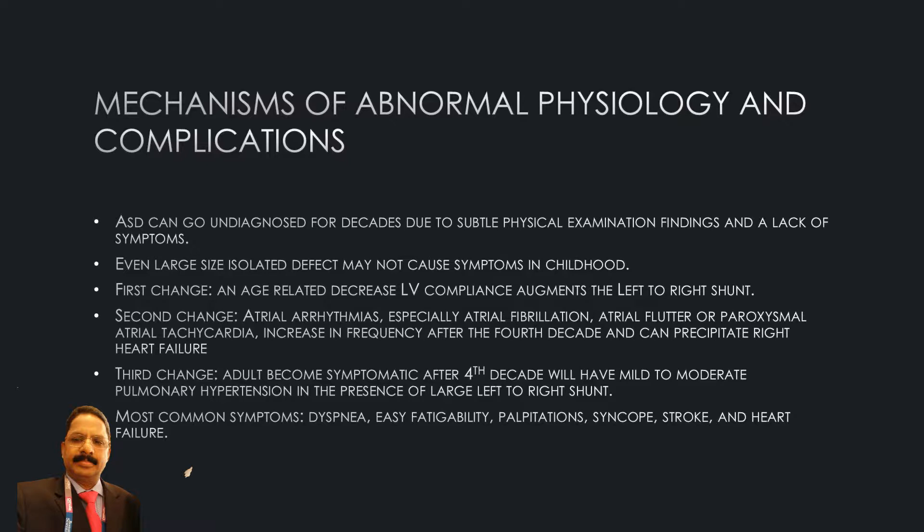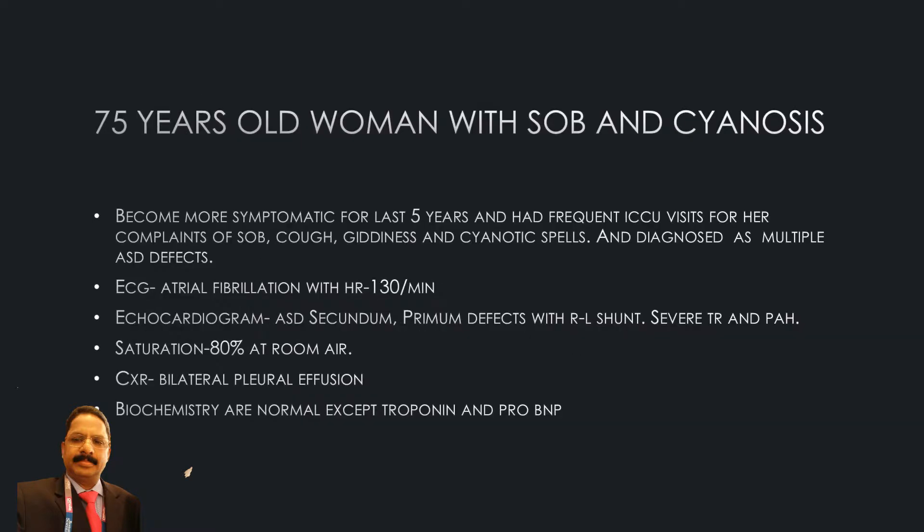The second change involves atrial arrhythmias — especially atrial fibrillation, atrial flutter, or paroxysmal atrial tachycardia — increasing in frequency after the fourth decade and potentially precipitating right heart failure. Third, adults become symptomatic after the fourth decade, with mild to moderate pulmonary hypertension in the presence of a large left-to-right shunt. Most common symptoms include dyspnea, easy fatigability, palpitations, syncope, stroke, and heart failure.